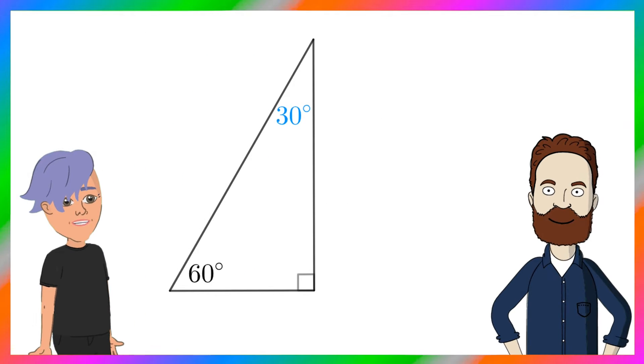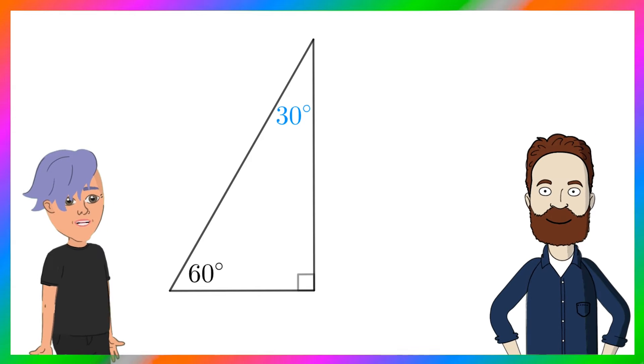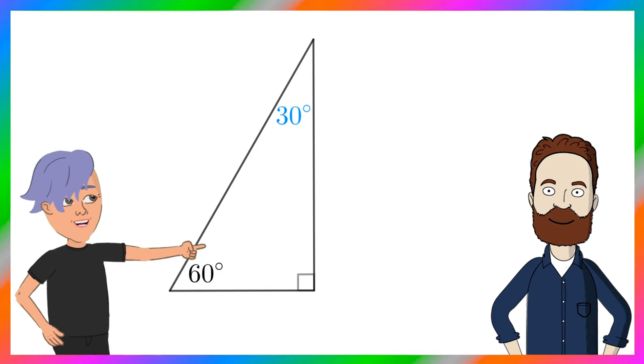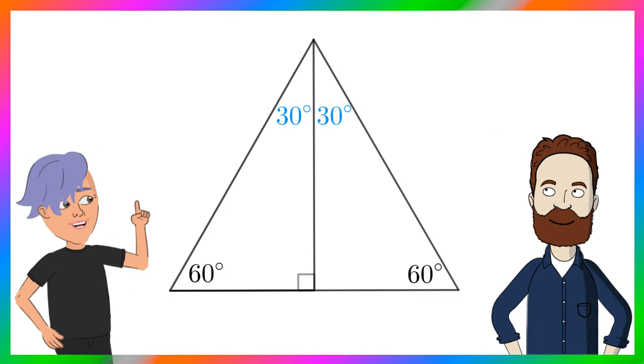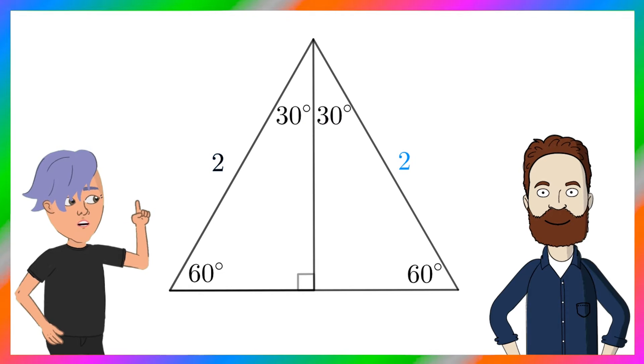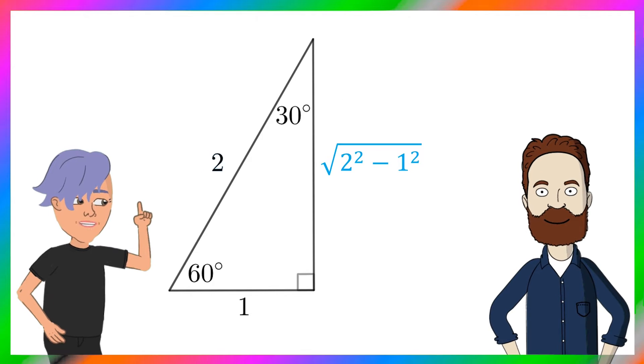Now for 30 or 60 degrees, put them in a triangle and see. Because it's half an equilateral triangle, the sides are 1, 2, root 3.